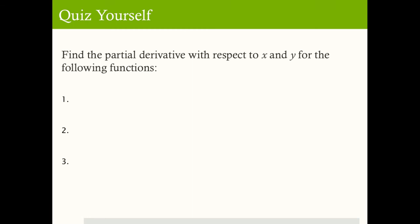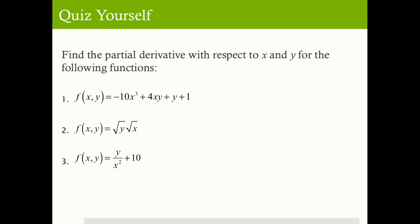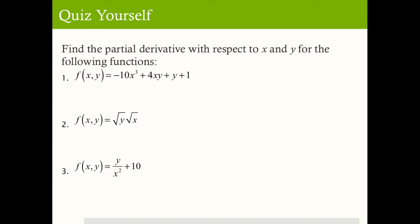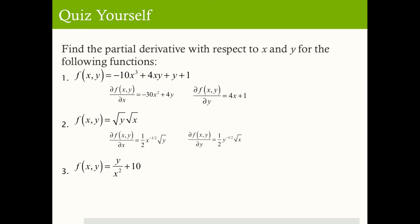Quiz yourself: find the partial derivative with respect to x and y for each of the following functions. For the first function, ∂z/∂x equals negative 30x² plus 4y and ∂z/∂y equals 4x plus 1. For the second function, ∂z/∂x equals one-half x to the negative one-half times the square root of y, and ∂z/∂y equals one-half y to the negative one-half times the square root of x. For the third function, ∂z/∂x equals negative 2y over x³ and ∂z/∂y equals 1 over x².